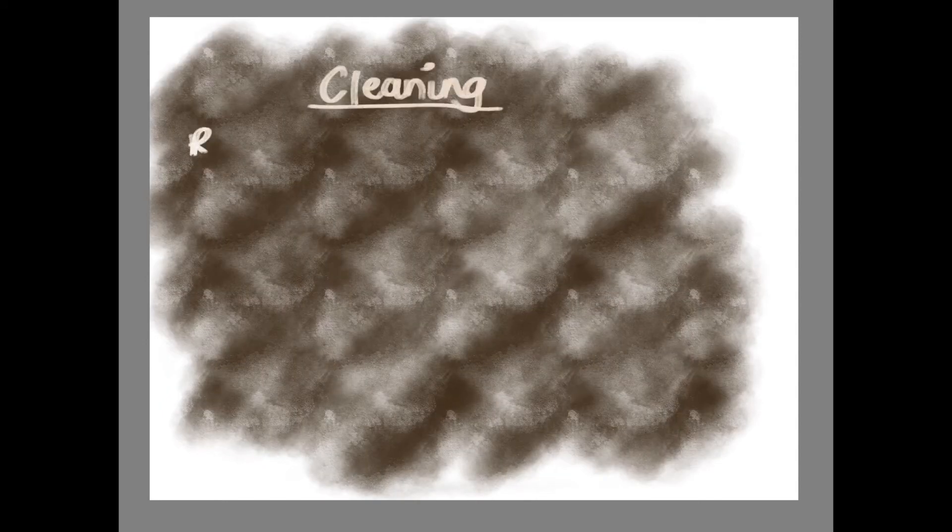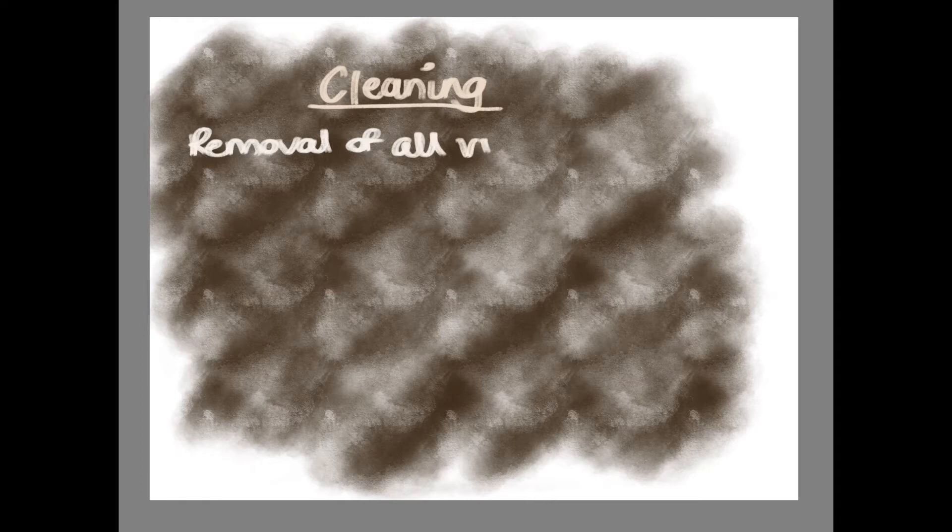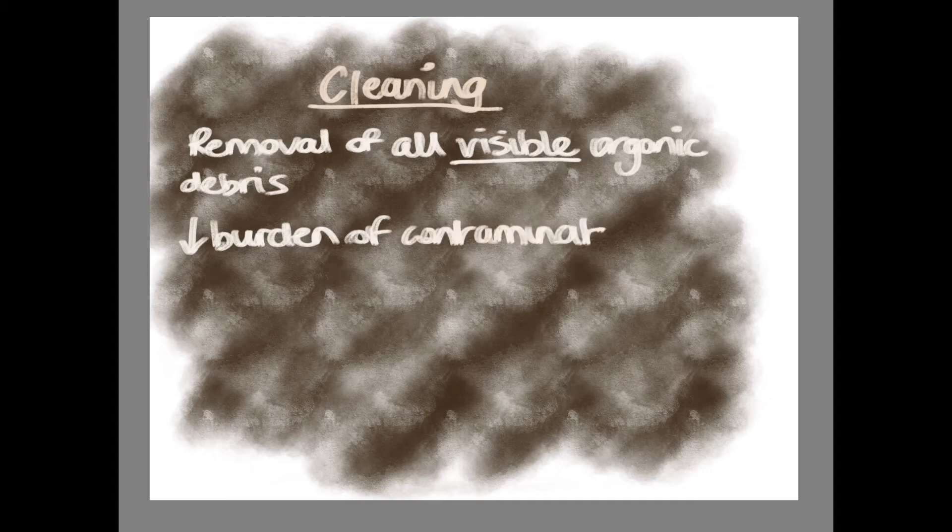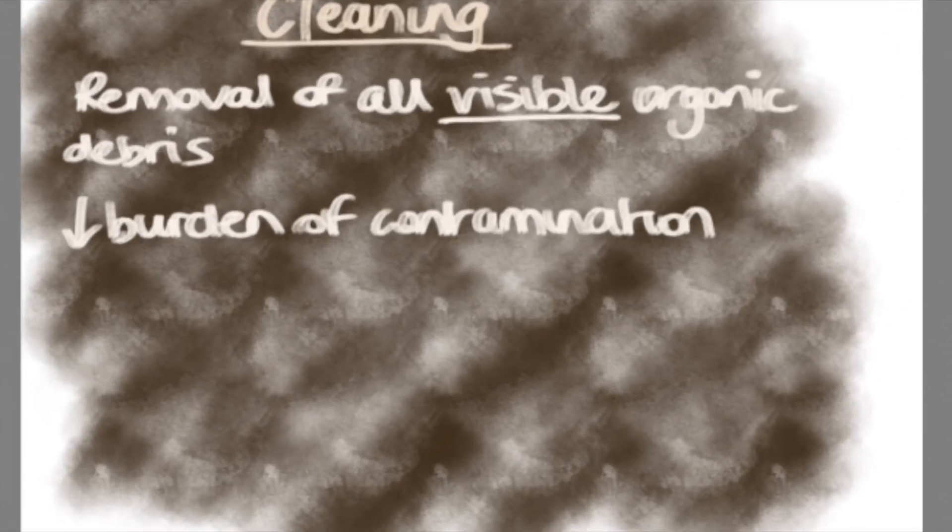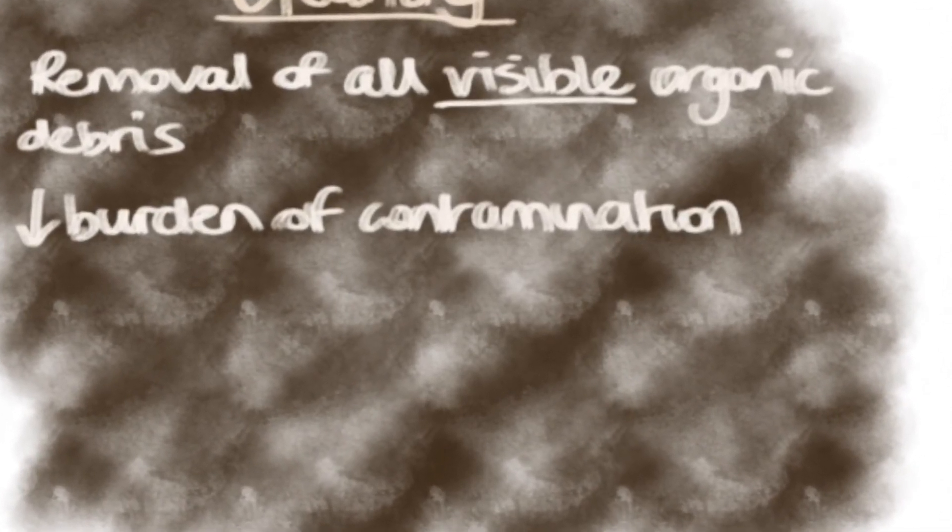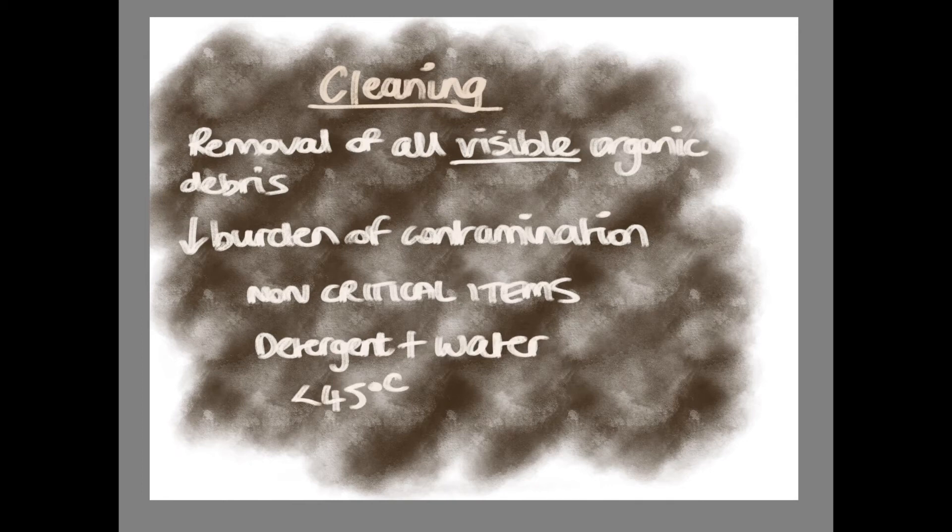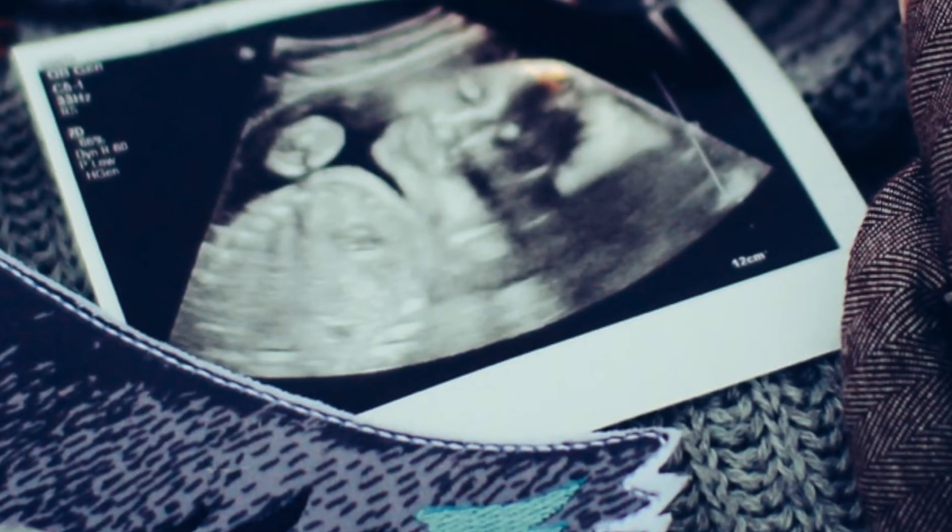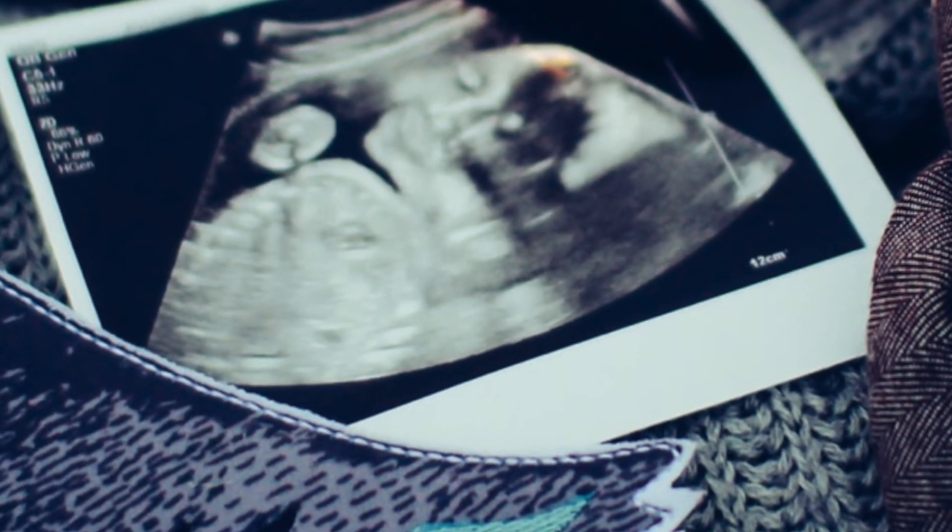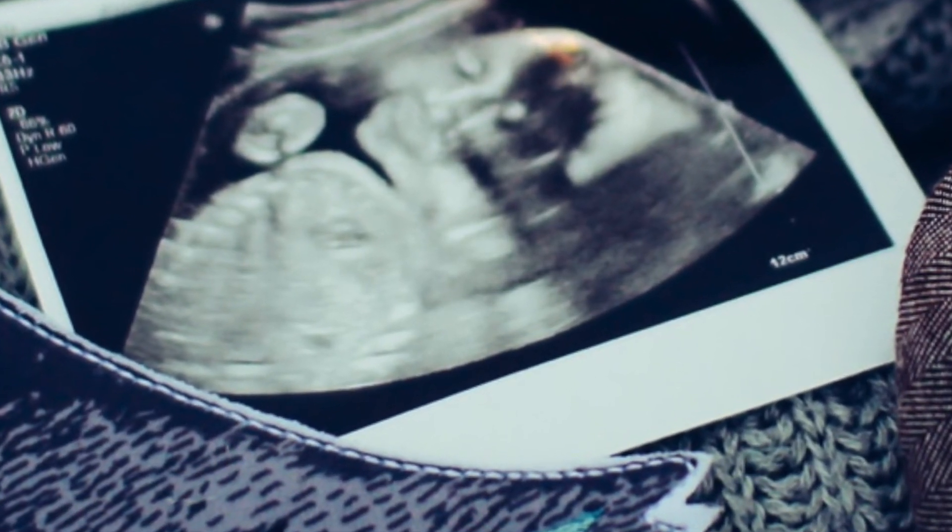Cleaning is an important component of the decontamination process and involves removing all visible organic debris. It lowers the burden of contamination for the processes of disinfection or sterilization and is the method of decontamination of non-critical items. Cleaning is usually via detergent and water in less than 45 degrees Celsius and this prevents a biofilm forming. Ultrasonic waves may be used to clean items, however not all equipment can tolerate this process.